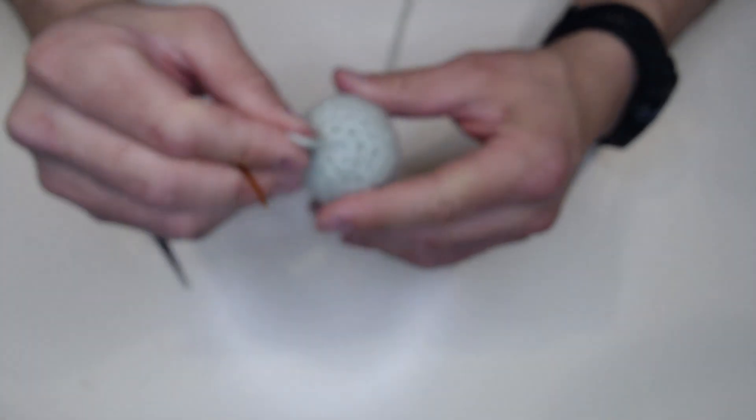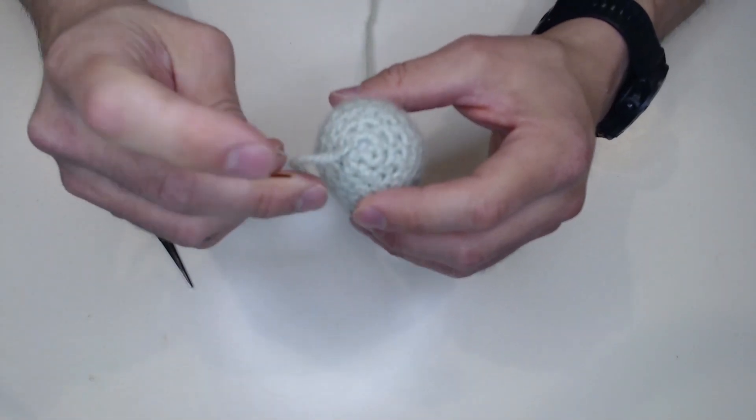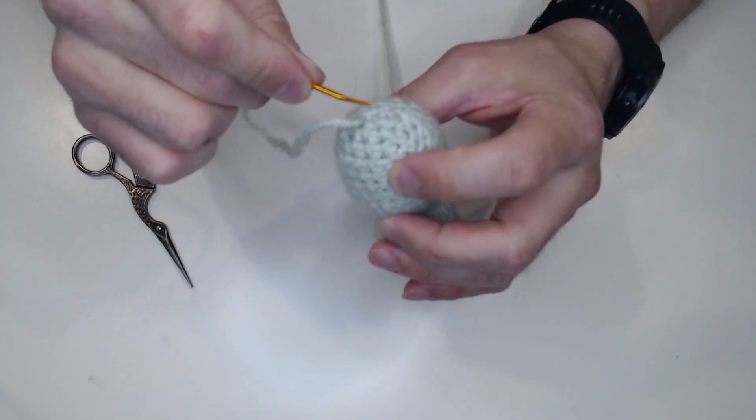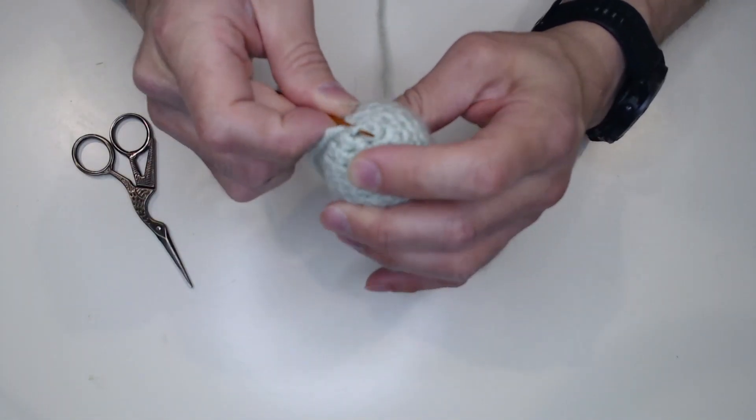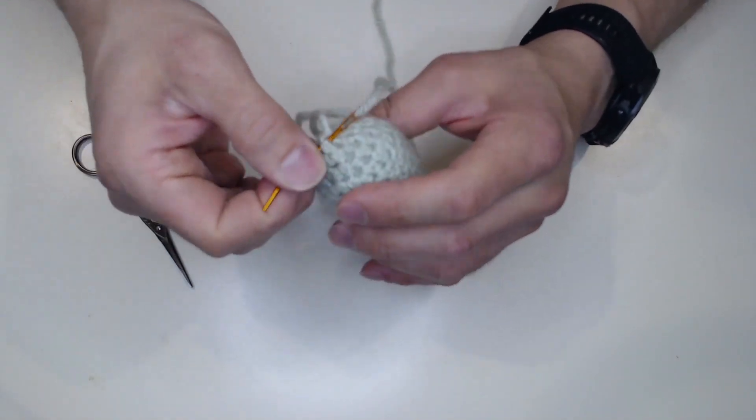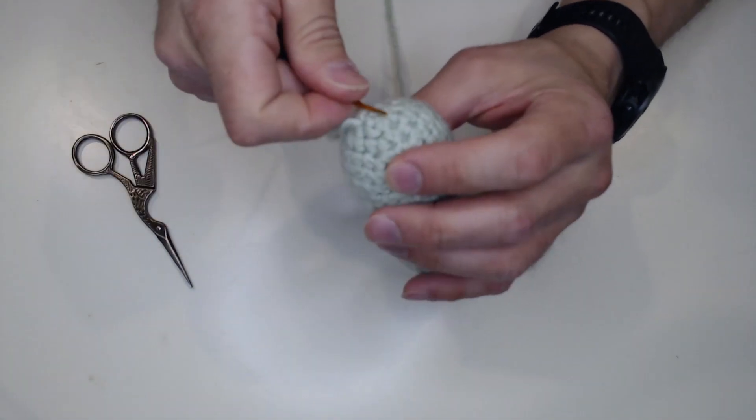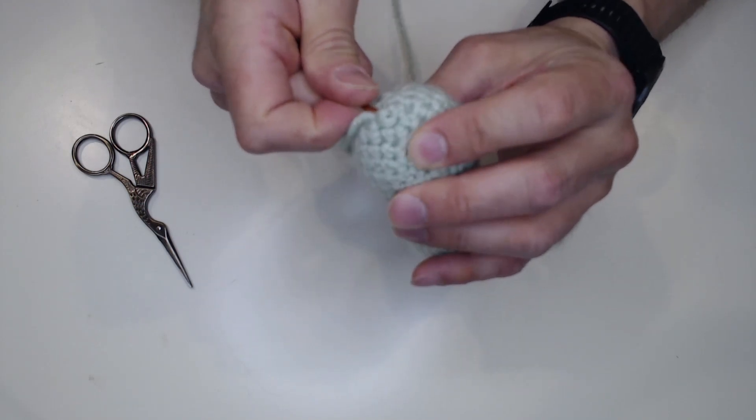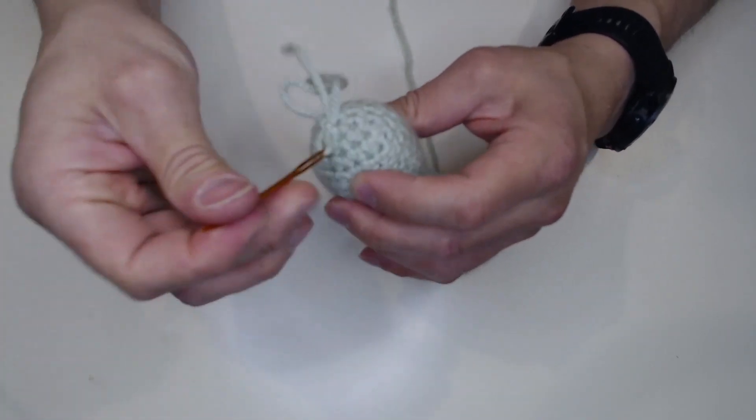So how you do this is you take your darning needle and I go through and kind of stitch through a couple of the stitches that were previously done.